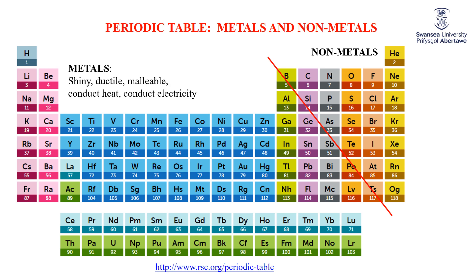Separated by this line are the metals from the non-metals. Non-metals, over here, in some cases might be shiny, ductile, malleable, conduct heat, conduct electricity — carbon, for example, in its form of graphite, conducts electricity rather well. But the important thing is they're not all of those things all at the same time.